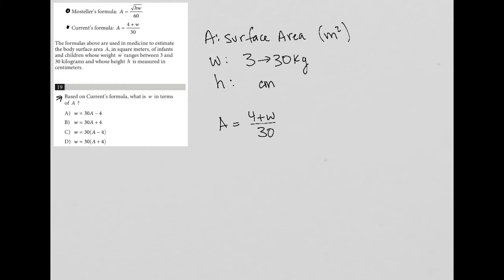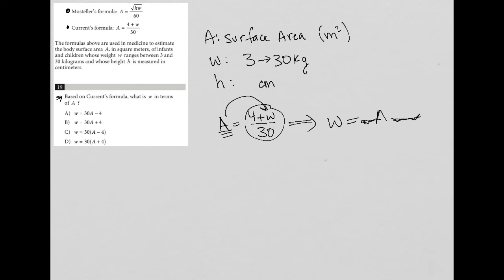All it's telling us is that the formula we have now is A in terms of W — we have A isolated and W is combined with all these other values. What we want instead is to convert this into W equals something with A involved. So we need to do some algebra in order to isolate W.